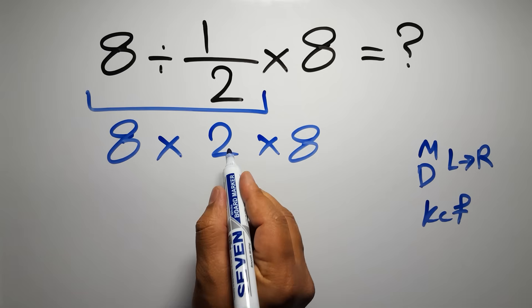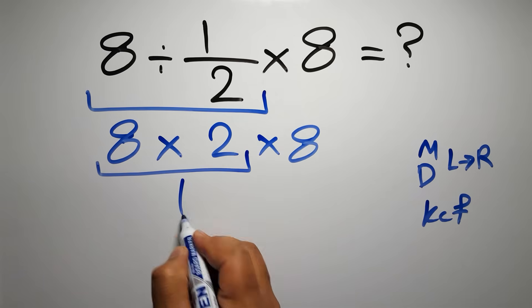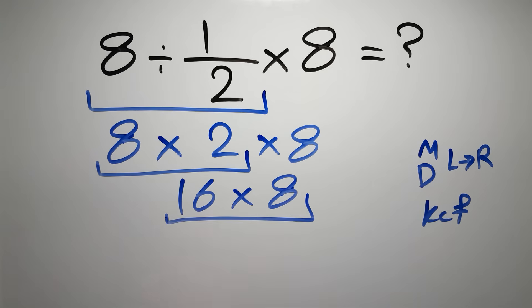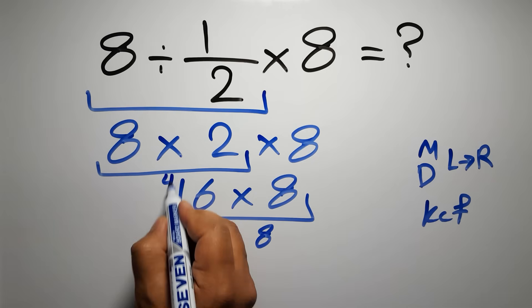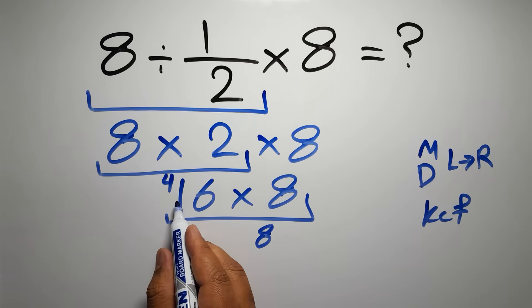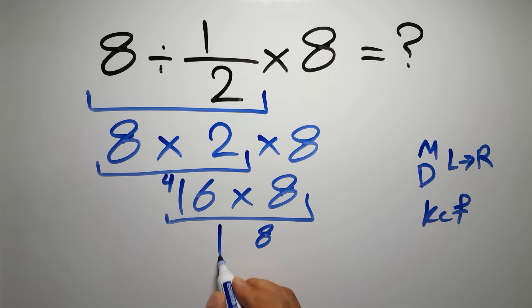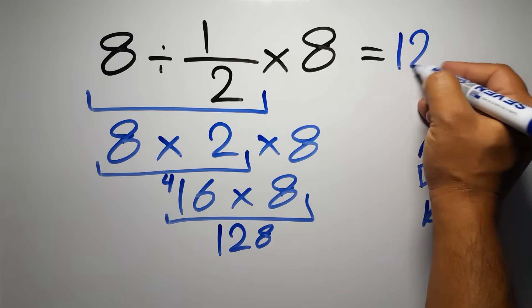8 times 2 gives us 16, and 16 times 8. 8 times 6 gives us 48; we write 8 here and carry 4 here. 8 times 1 gives us 8, and 8 plus 4 equals 12. So we have 128, and this is our final answer to this problem. The correct answer is 128.